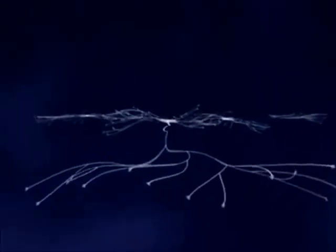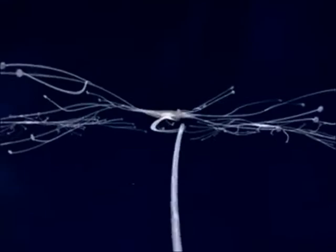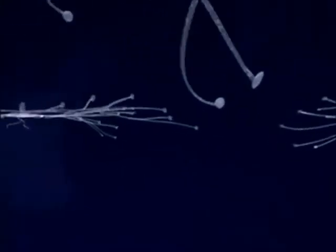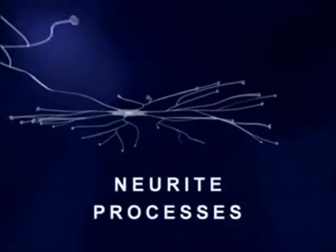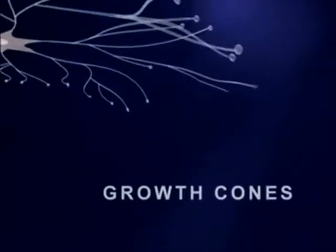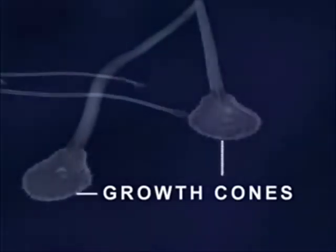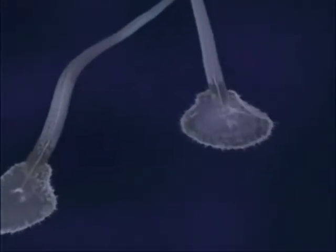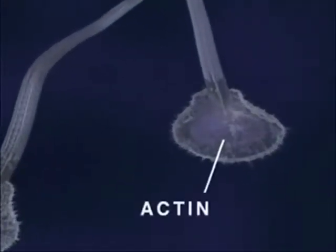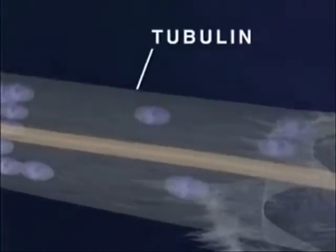In this animation, we see three brain neurons growing in a tissue culture, each with a central cell body and numerous neurite processes. At the end of each neurite is a growth cone where structural proteins are assembled to form a cell membrane. Two principal proteins involved in growth cone function are actin, which is responsible for the pulsating motion seen here, and tubulin, a major structural component of the neurite membrane.